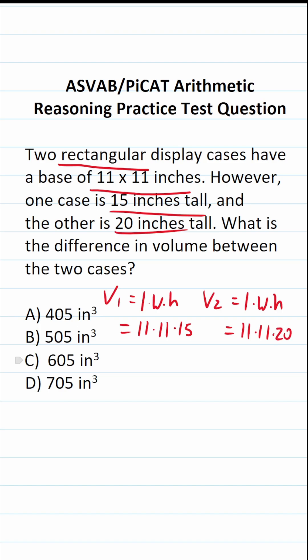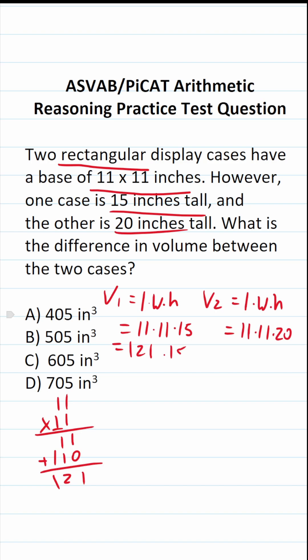You should know 11 times 11 is 121. But if you don't, you have to work it out: 1 times 1 is 1, 1 times 1 is 1. Before you start multiplication with this 1, bring in a 0 placeholder. 1 times 1 is 1, 1 times 1 is 1. Add this up: 1, 2, 1. So this becomes 121.